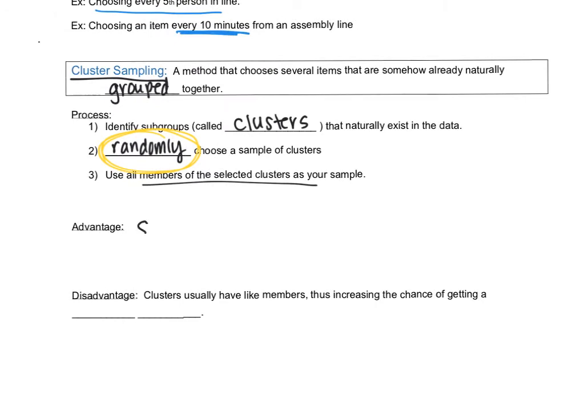Someone might do this because it saves time and money. It's also convenient. So clusters could be like fruit, like grapes. They're already clustered together. Or a class of students. As a class, you're already clustered together rather than choosing individual students. The problem is clusters often have like members. And so that might increase our chance of a biased sample. Students in the same class might be a little similar. But random will help take care of that because we are going to choose more than one cluster. We won't choose a single class. We'll choose like five classes or 10 classes. So that helps with the bias.